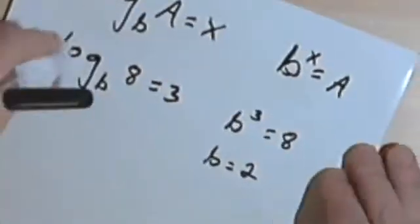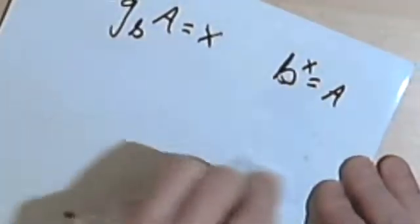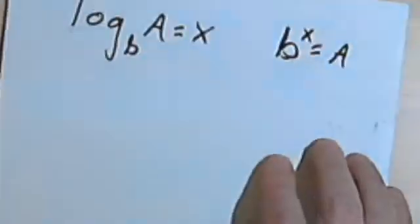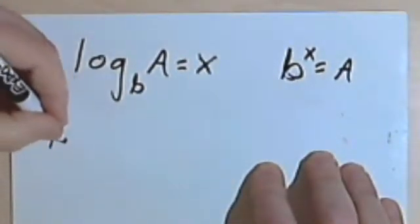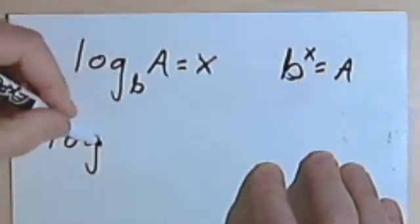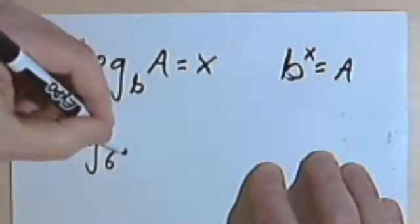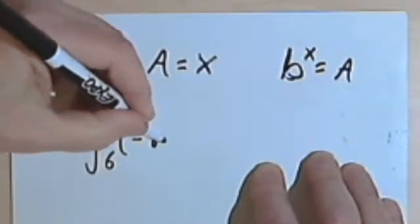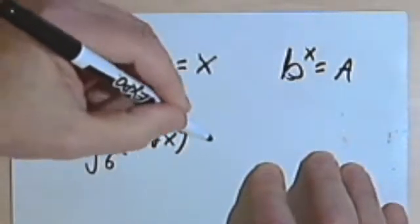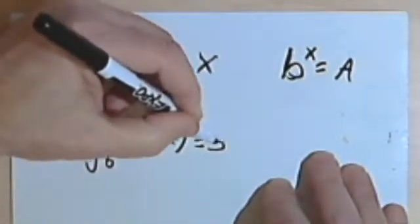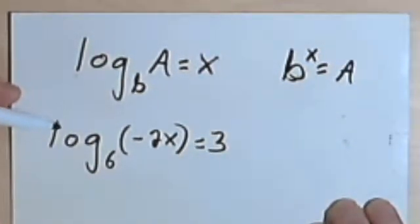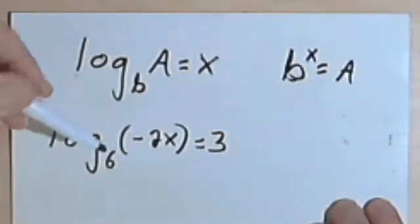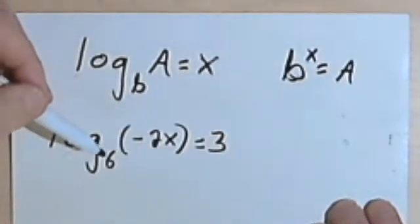Okay, so these are kind of basic. Let's get on to some a little more sophisticated. So what if I have log base 6 of negative 2x equals 3. Now the whole trick here is just do the same thing we've been doing all along. I know this looks confusing, but it's really not that hard.